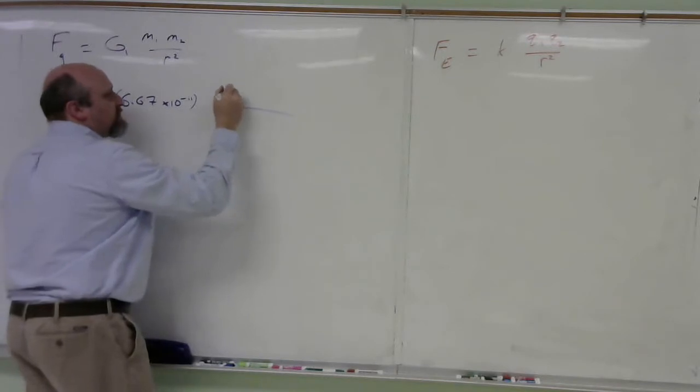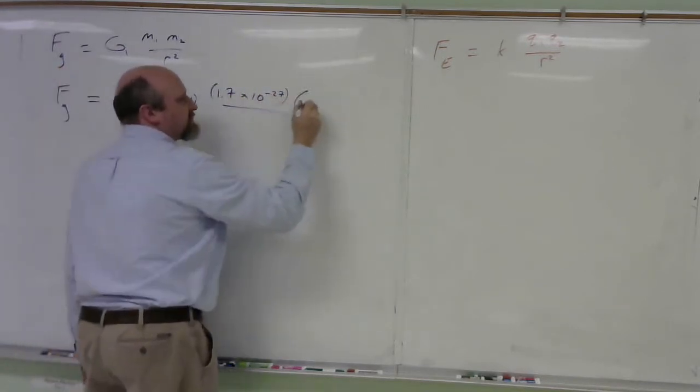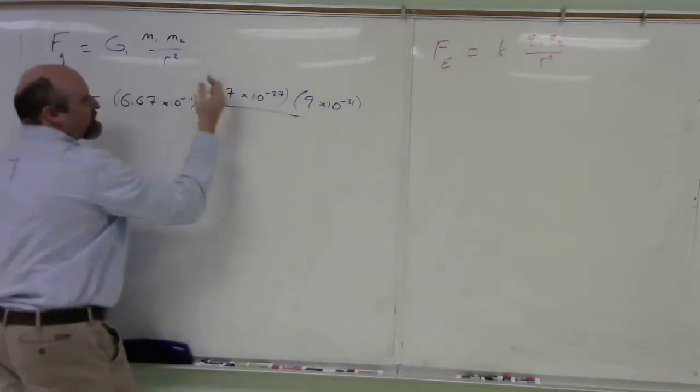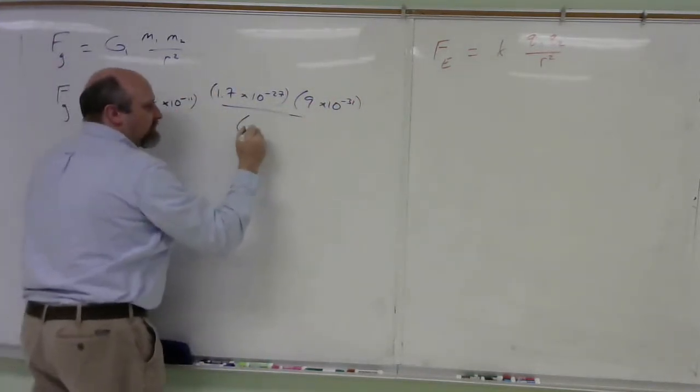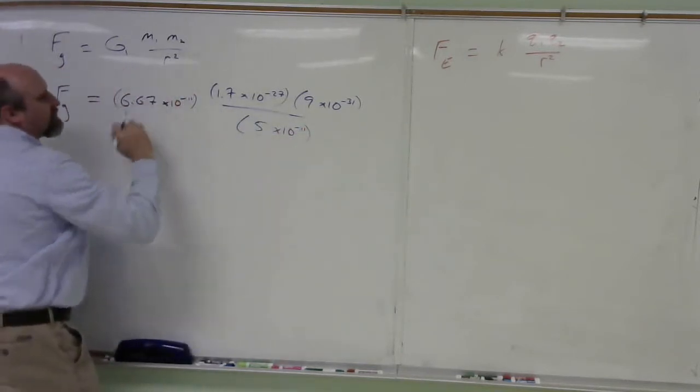Masses, mass of the proton, 1.7 times 10 to the negative 27 kilograms. Mass of an electron, 9 times 10 to the negative 31 kilograms. Divided by the separation distance, which is 5 times 10 to the negative 11 meters. And then it's squared.